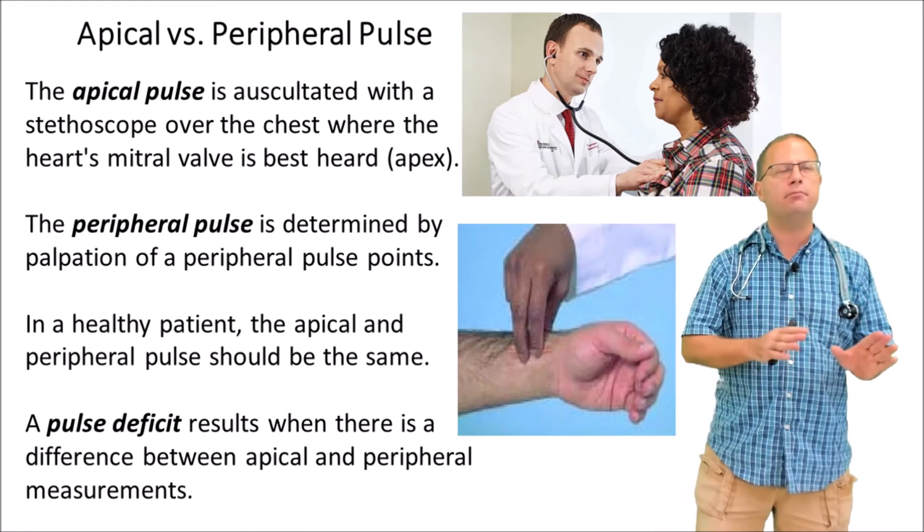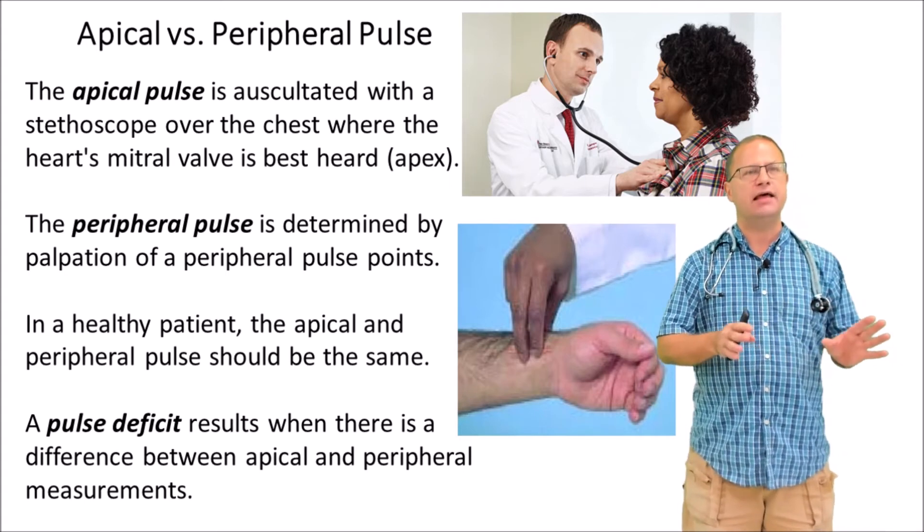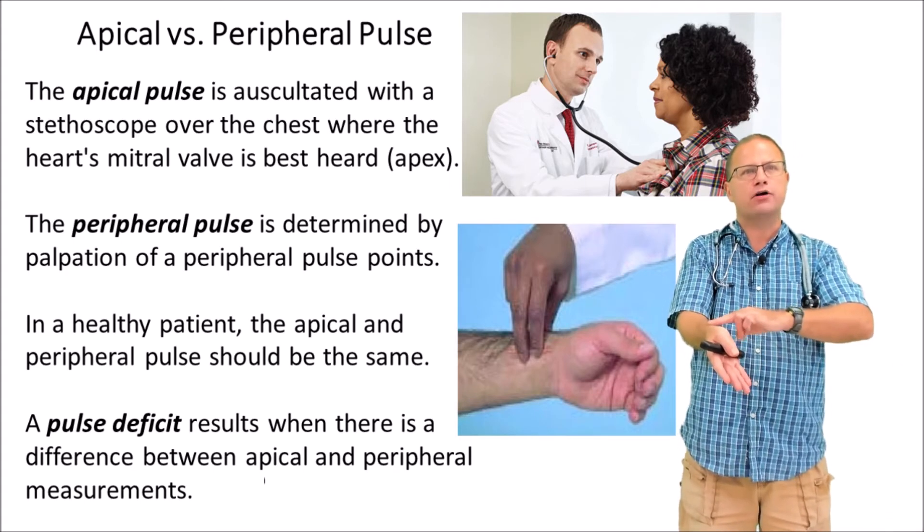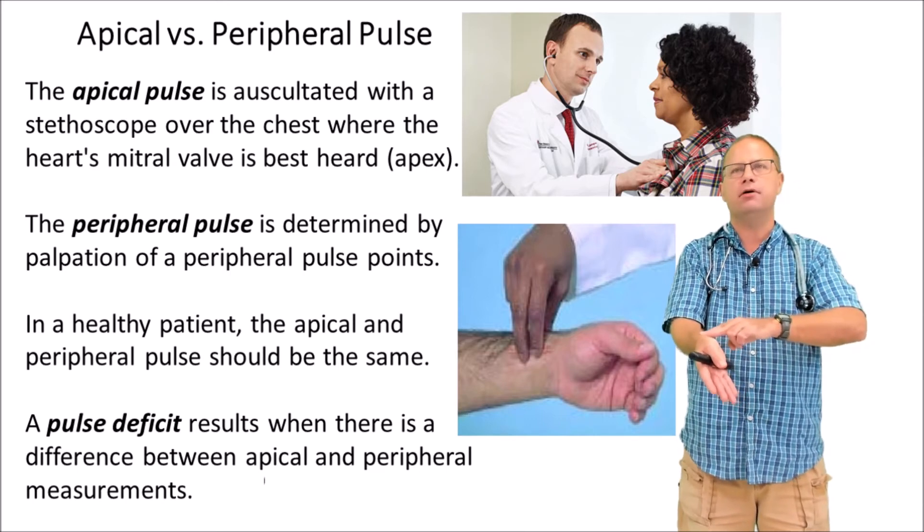The peripheral pulse is usually detected by palpation rather than auscultation. We're actually feeling or compressing an artery with our hand or fingertips and counting the number of pulse waves per minute.